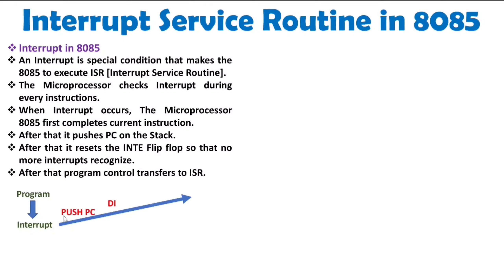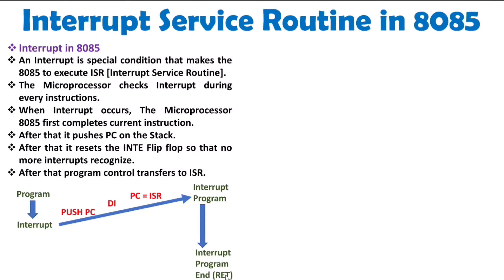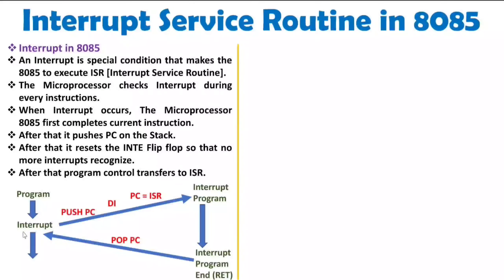Next, the microprocessor will push the program counter first. The reason is it needs to store the execution point of the main program — it must save the location of the main program before transferring control to the interrupt program. So push PC happens first. After that, PC gets transferred to the interrupt service routine, which then begins executing. At the end of the ISR, a POP PC operation is performed. Since POP PC has the original address on the stack, retrieving that data via POP PC restores the program counter and execution of the main program resumes. This is the complete process.